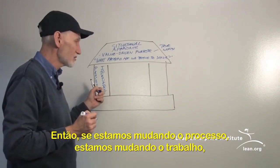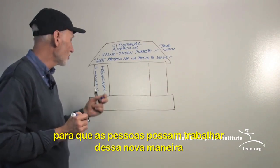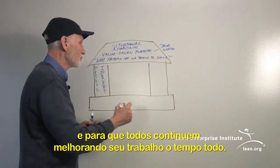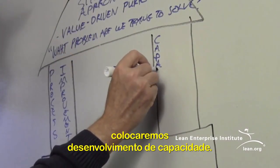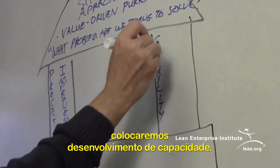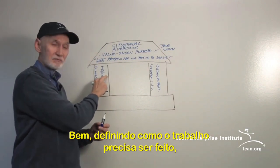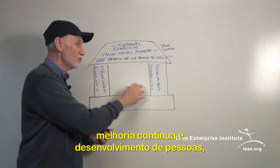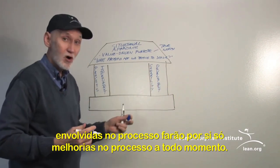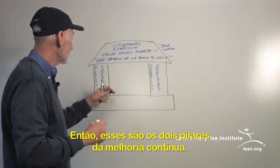As we can see by looking at this as a house, lean is much more than that. In addition to changing the processes and the work, we need to develop the people so they can actually work in these new ways and so that everyone is continually improving their work all the time. So the second pillar is capability development — defining how the work needs to be done, developing people throughout the entire system so they can be making those improvements on their own, all the time.